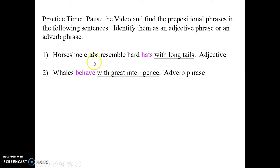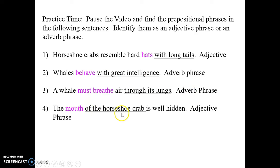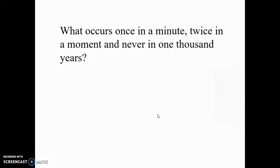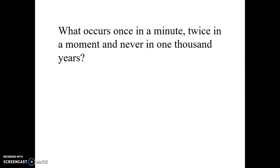Hopefully you've thought it through and let's see how you did. Horseshoe crabs resemble hard hats with long tails. With long tails is your prep phrase. It modifies hats. It makes it an adjective phrase. Whales behave with great intelligence. With great intelligence describes how whales behave. So it describes behave. Behave is a verb. So it is an adverb phrase. A whale must breathe through its lungs. Through its lungs describes where it must breathe or must breathe air through its lungs. Air can't go through the lungs unless it's being breathed. Must breathe through its lungs describes must breathe, which is a verb phrase, which makes this an adverb prepositional phrase. The mouth of the horseshoe crab is well hidden. Of the horseshoe crab describes whose mouth it is. Mouth is a noun. Therefore, it is an adjective phrase.